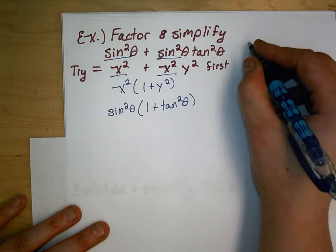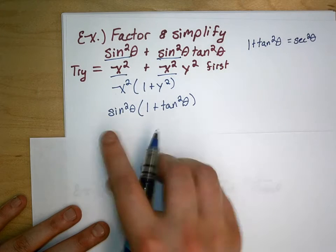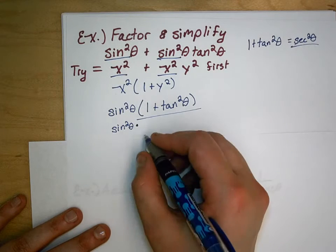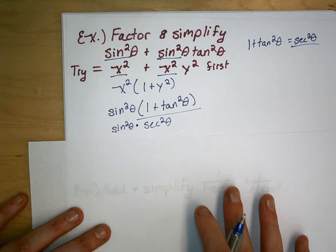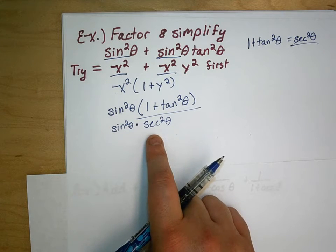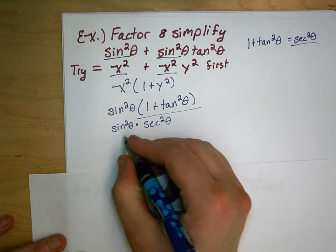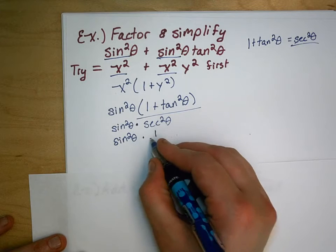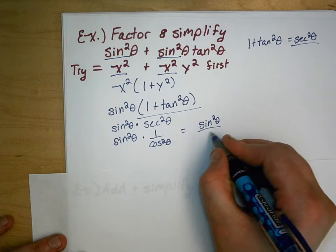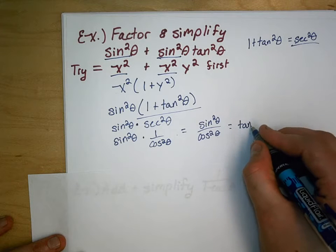So that identity is 1 plus tan squared theta equals secant squared theta. Then I get sine squared theta times that expression, which just turns into secant squared theta — we're just substituting that in. Now if you get stuck here, remember that you can turn this into sine and cosine. Secant becomes 1 over cosine squared theta, so we get sine squared theta times 1 over cosine squared theta, which equals sine squared theta over cosine squared theta — that's a quotient identity, which equals tan squared theta.